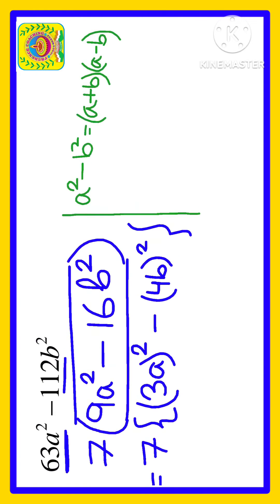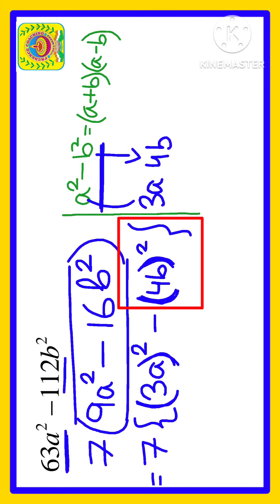a + b times a - b. If we compare with this identity a² - b², in place of a we have 3a because we have (3a)², and in place of b we have 4b because we have (4b)² over here.